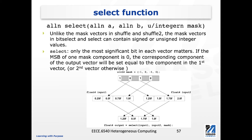If the most significant bit of a mask component is 0, then the corresponding element of the output vector will be set equal to the component in the first vector. If the most significant bit of the mask component is 1, then we'll use the corresponding component in the second vector. For example, our mask has four elements: minus 1, 0, minus 1, and 0. Because minus 1 in binary has all bits set, its most significant bit is 1.